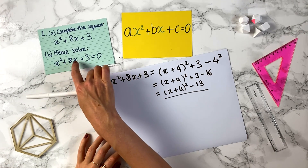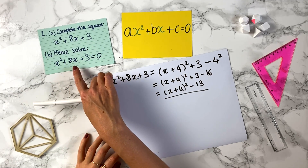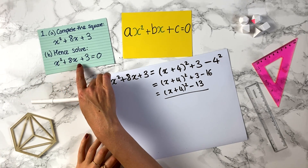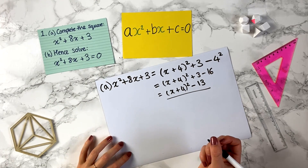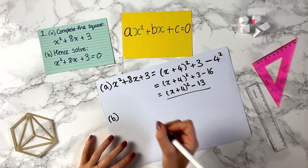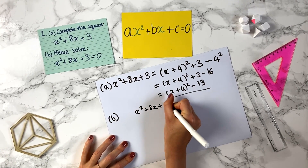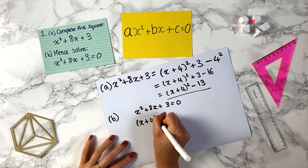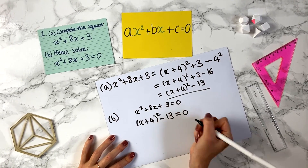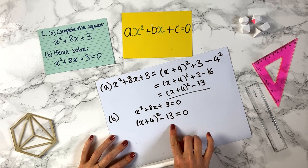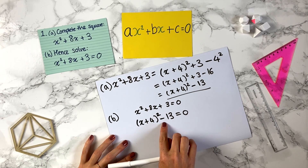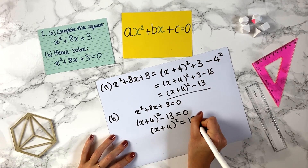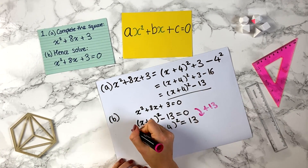Think about what this question means when it says solve x squared plus 8x plus 3 equals 0 — it means we want to find the x values that make this true. We want to find the numbers that x can take such that if you do that number squared plus 8 times that number plus 3, we get 0. So for part b, we want to solve x squared plus 8x plus 3 equals 0. We can rewrite this using what we've just done: x plus 4 squared minus 13 equals 0. We can add 13 to both sides to get x plus 4 all squared equals 13.